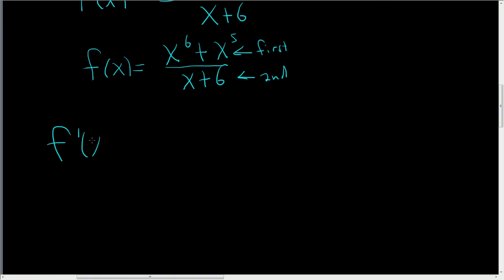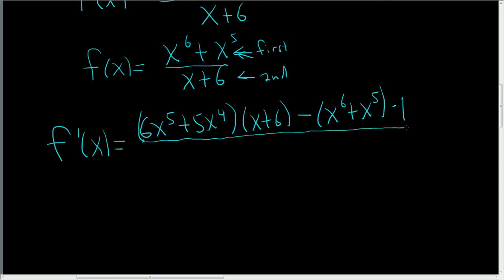All right, so taking the derivative using the quotient rule, it's the derivative of the first, so 6x to the fifth plus 5x to the fourth. That's the derivative of the first piece times the second, so x plus 6 minus the first, so x to the sixth plus x to the fifth times the derivative of the second, which is just 1. And all of this is being divided by x plus 6 quantity squared.